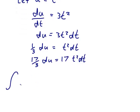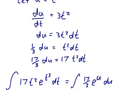So the integral of 17t² e^(t³) dt becomes the integral of 17/3 e^u du. The 17t² dt became 17/3 du, and the t³ became u, but the e is still there as e^u.